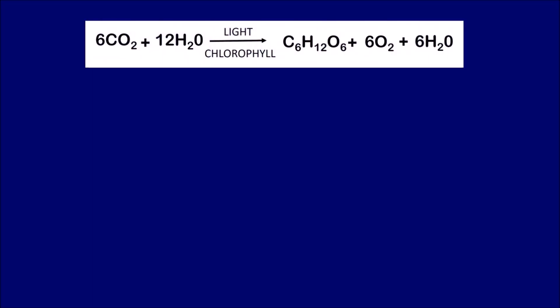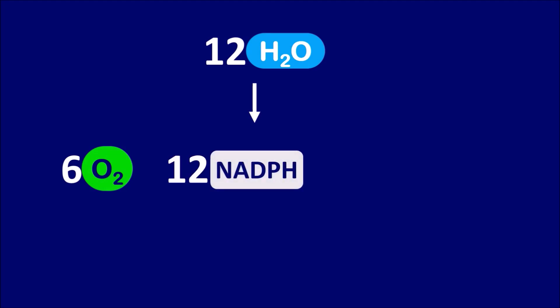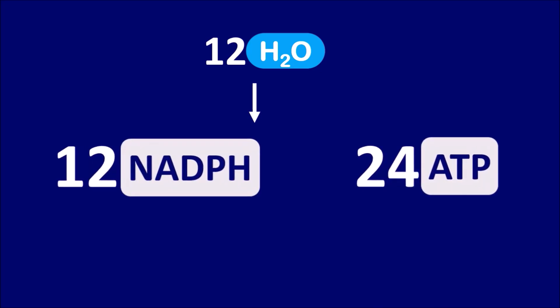As per the chemical equation, 12 molecules of water are involved in the formation of 1 molecule of glucose. So in light reaction, 12 water molecules are involved to form 6 molecules of oxygen, 12 molecules of NADPH and 24 molecules of ATP. The oxygen is released into the atmosphere whereas NADPH and ATP are utilized in the dark phase.